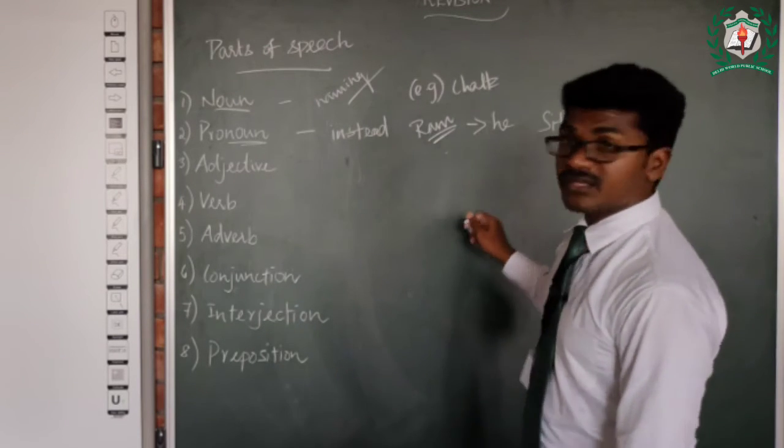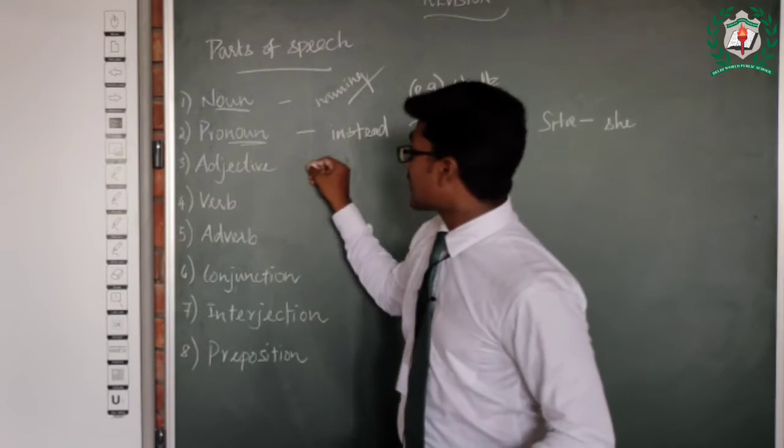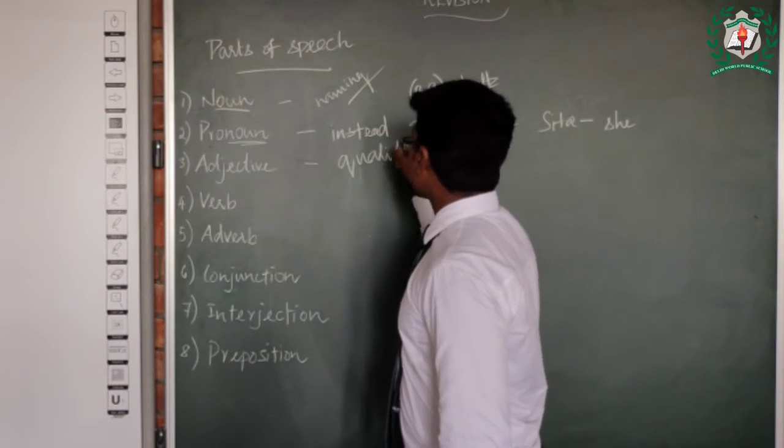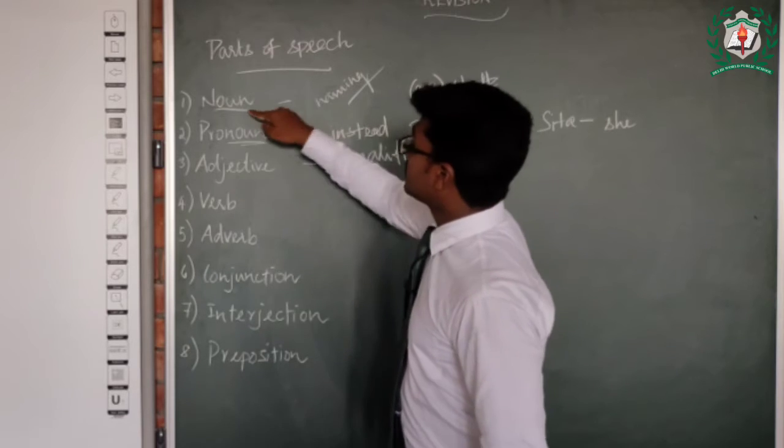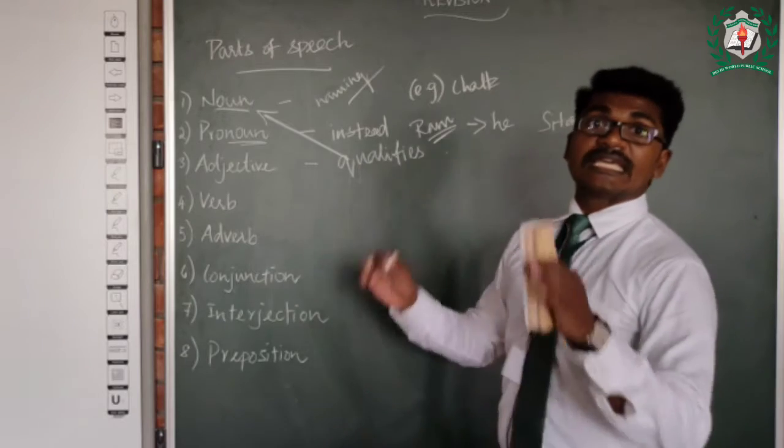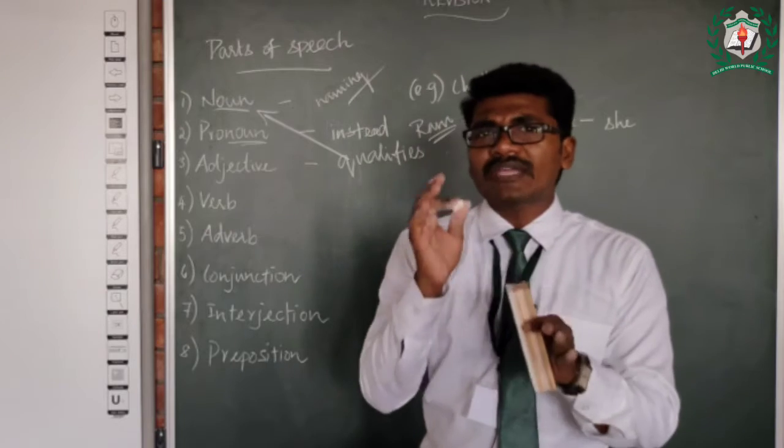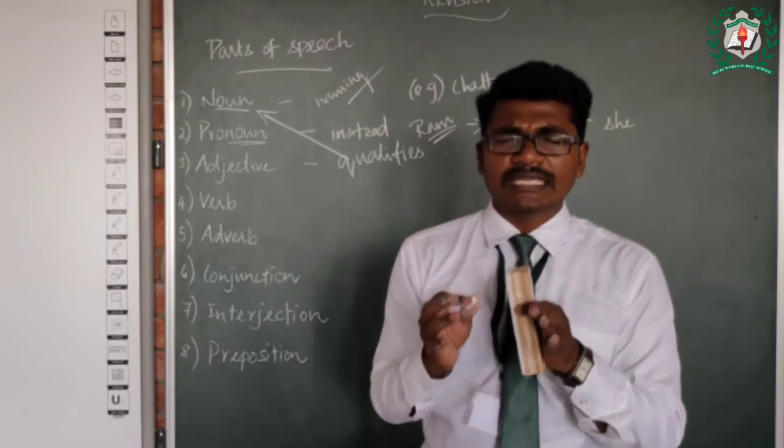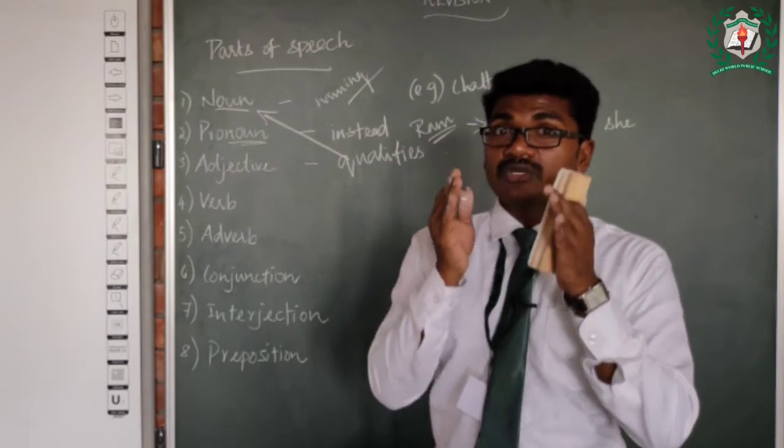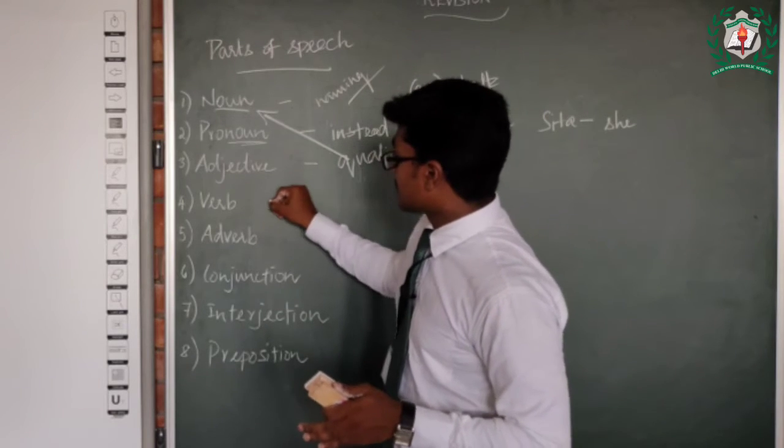Next, adjective. What does mean by adjective? Qualifies. It qualifies the noun. Boy. How it qualifies? He is a boy, it's a simple statement. So now how can we qualify the boy? He is a good boy. We added 'good' here, so it qualifies the boy.